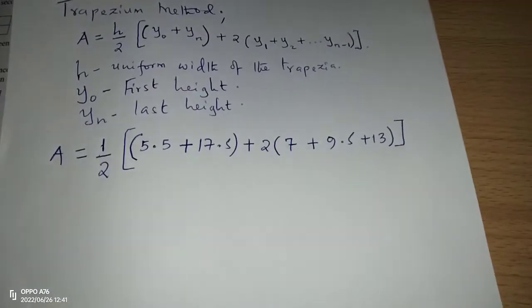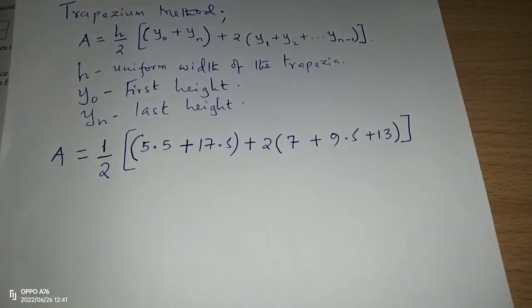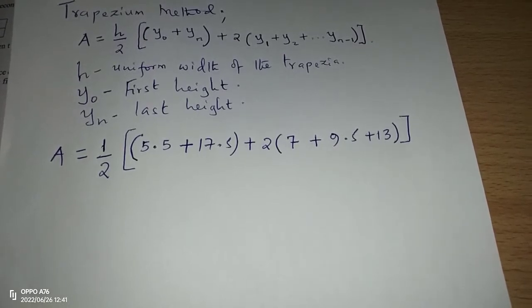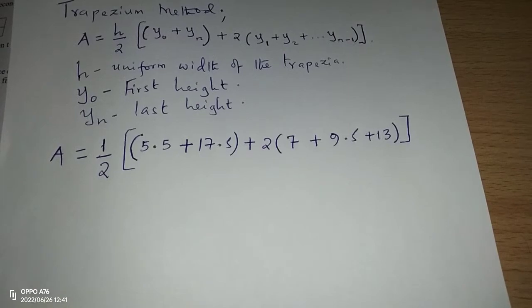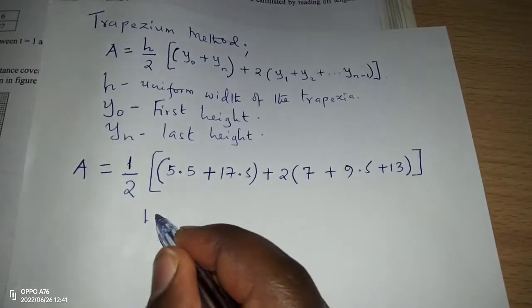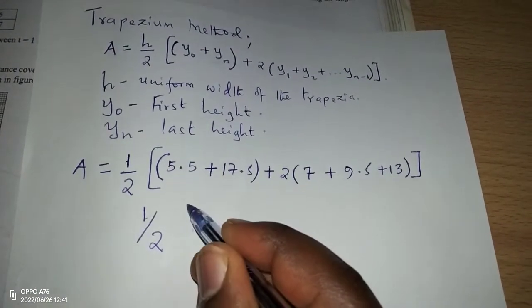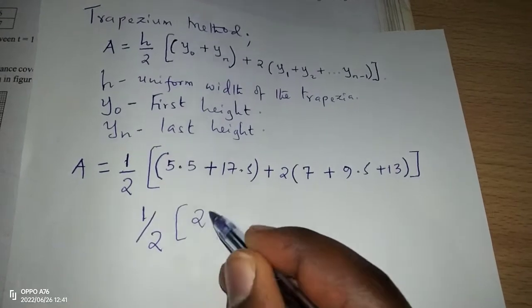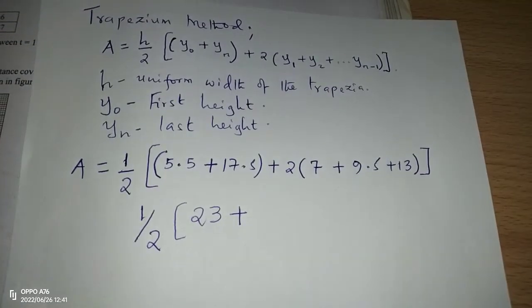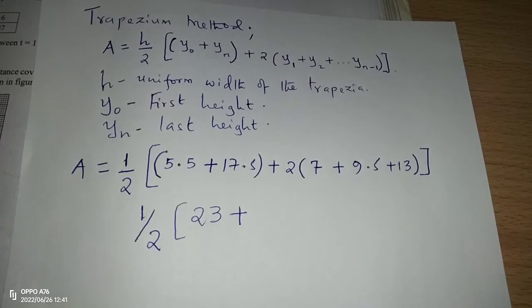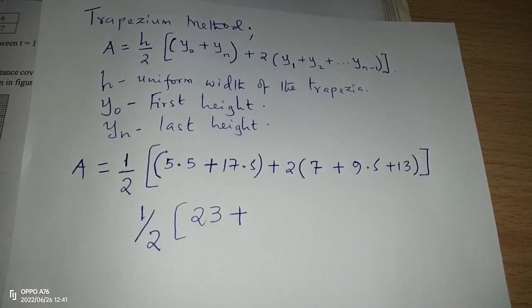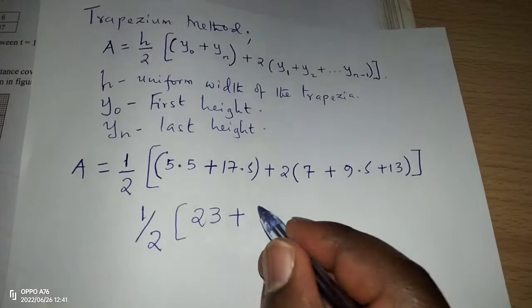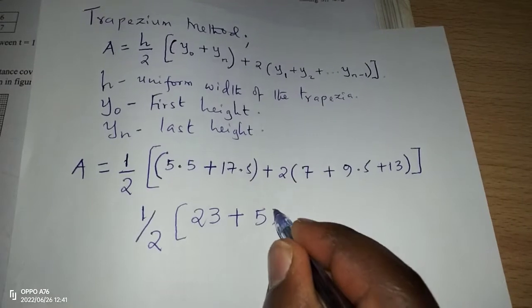So now we can compute the values. With 5.5 and 17.5, we get 23. So we have ½ multiplied by 23, then plus 7 plus 9.5 plus 13. These ones are being multiplied by 2, they give us 59.